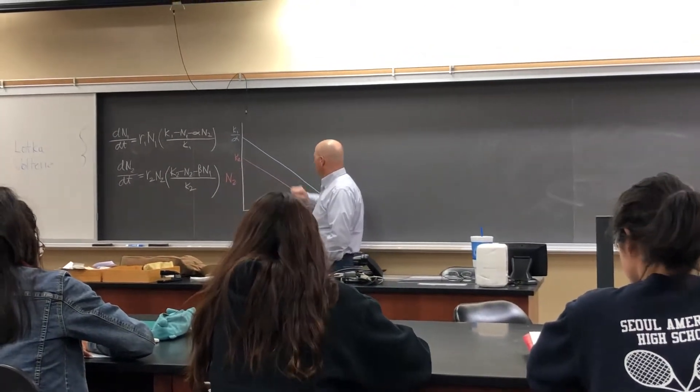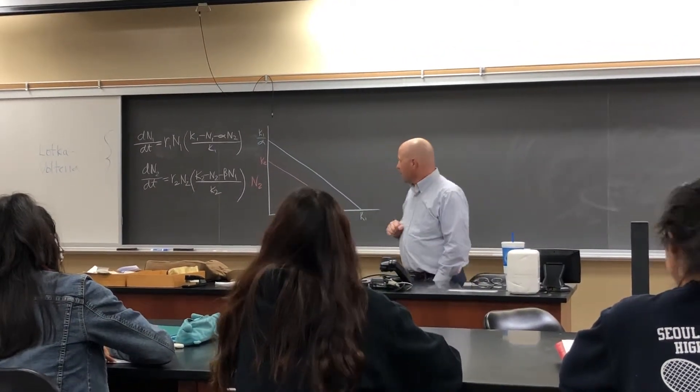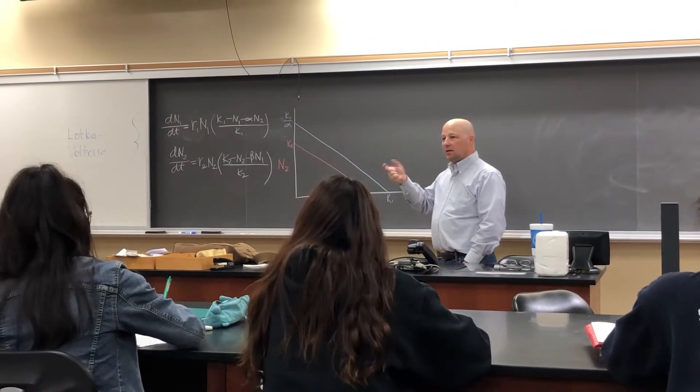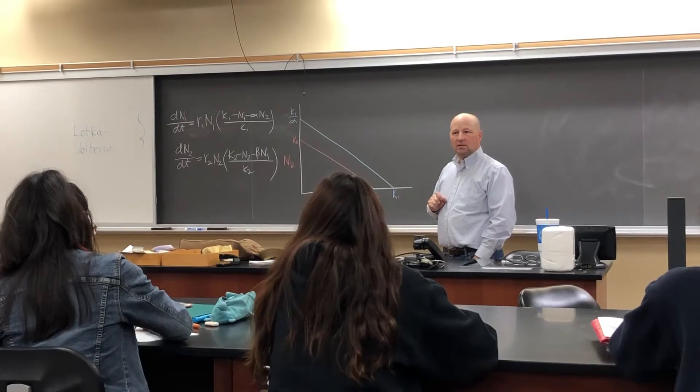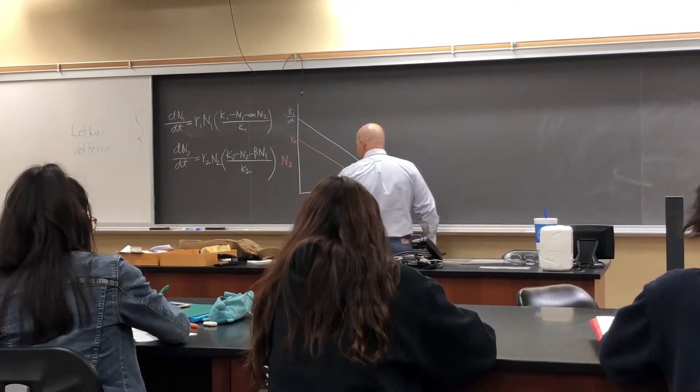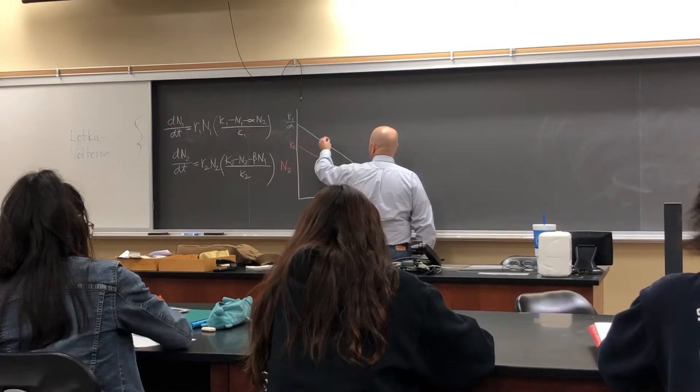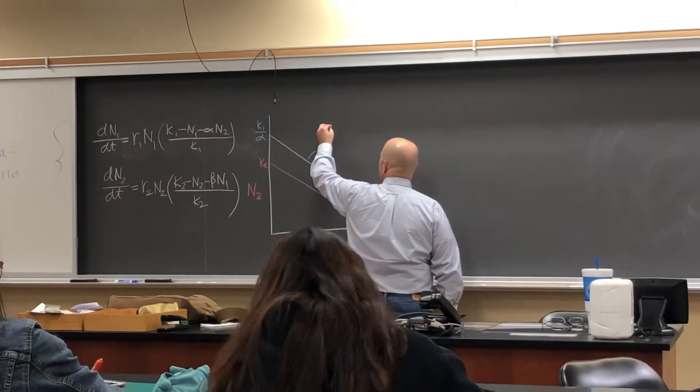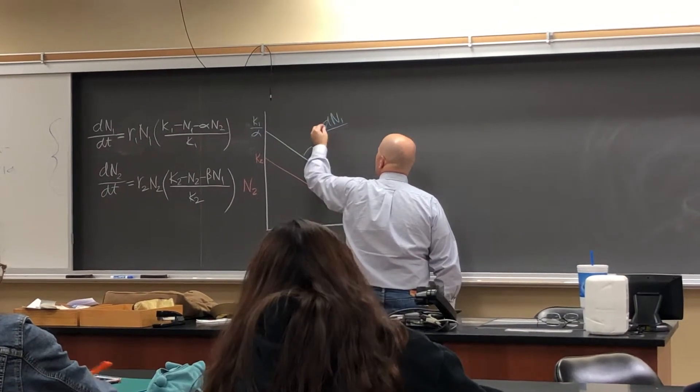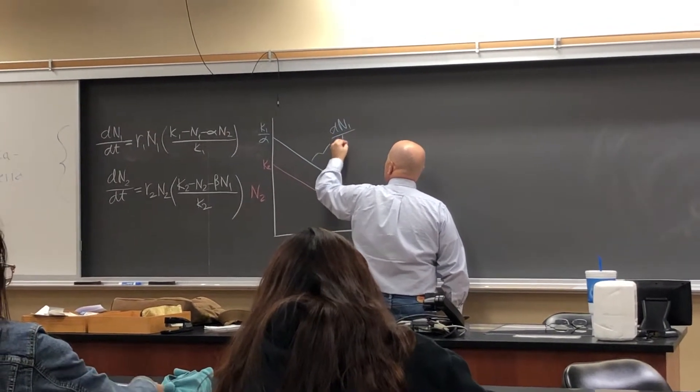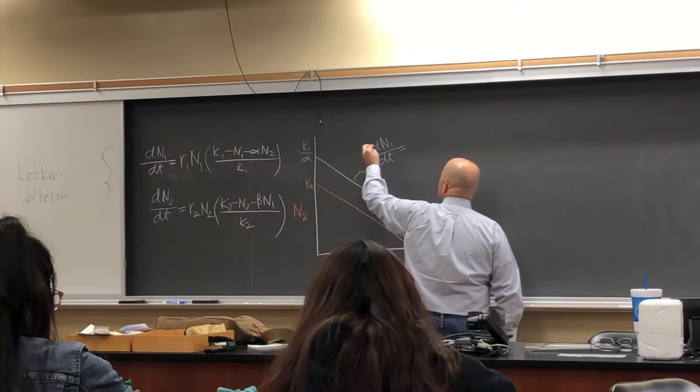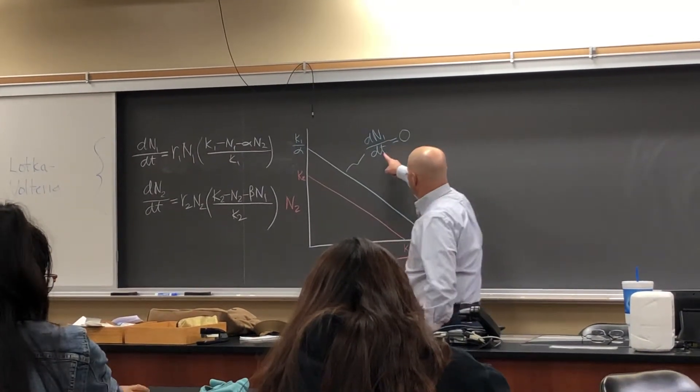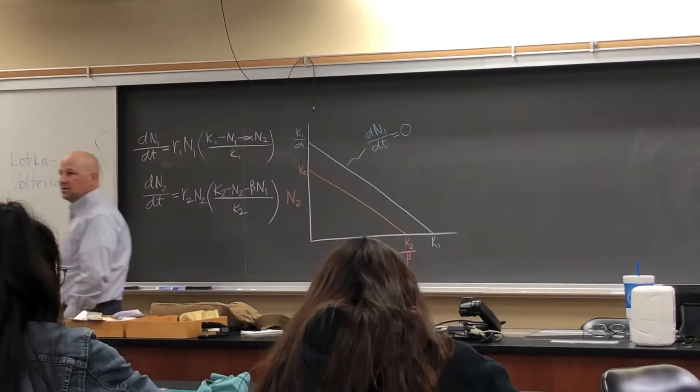So let's take the blue one. It's really the carrying capacity when you're combining the effects of two species, right? So it's the point. I mean, technically, mathematically, this line represents all the values of N1 and N2 that would make dN/dt equal to zero.